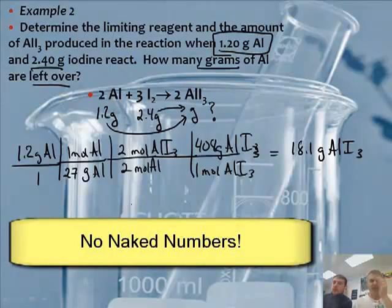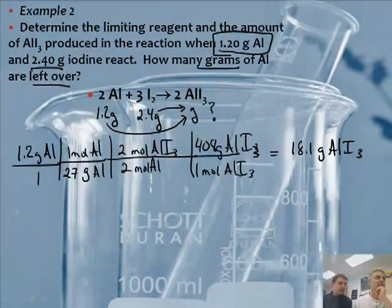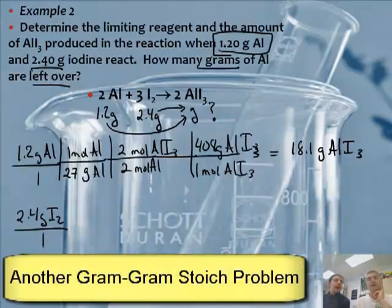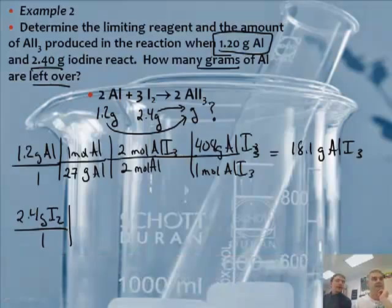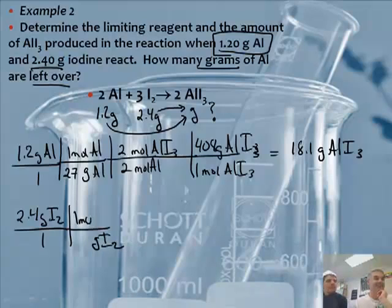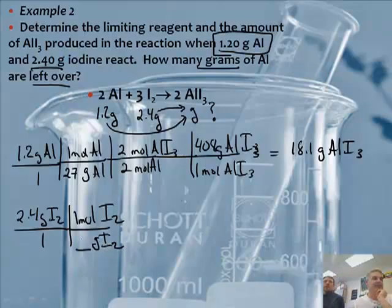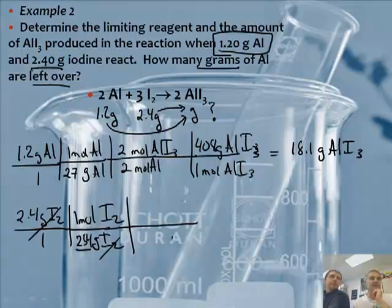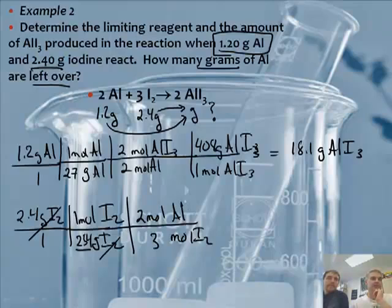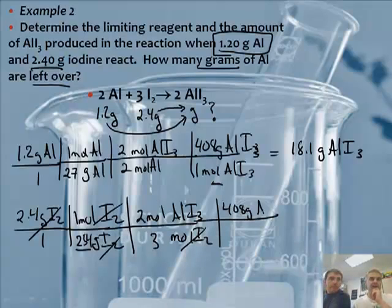Now for the second conversion: 2.4 grams of I₂ over 1. Convert grams of I₂ to moles of I₂ — iodine's molar mass is 127, so I₂ is 254 g/mol. Then convert moles of I₂ to moles of AlI₃: that's a 3-to-2 ratio from the balanced equation. Then convert moles of AlI₃ to grams using 408 g/mol. The fraction 408 g/mol is the same as before, so we don't need to redo it.